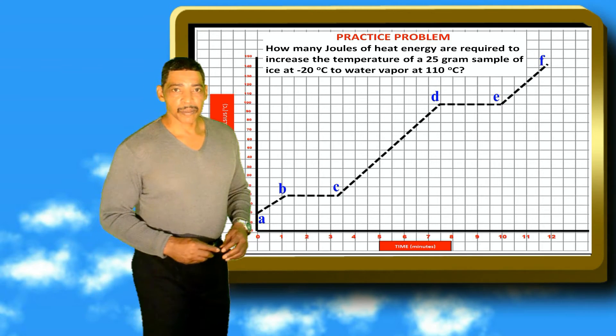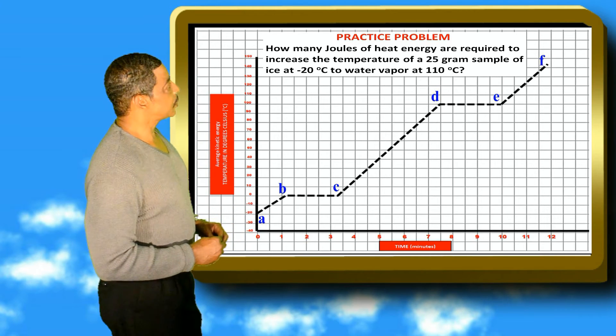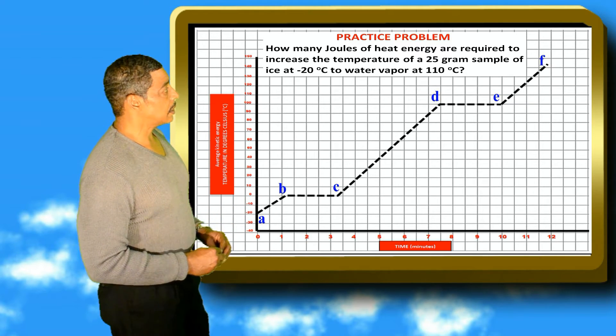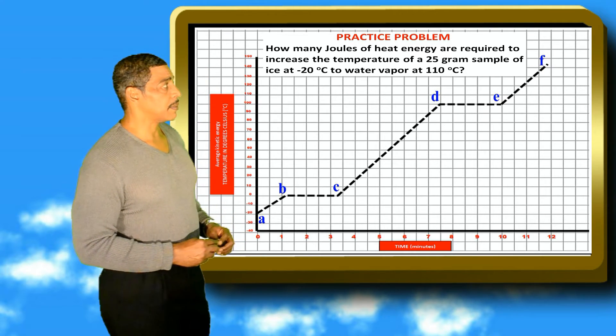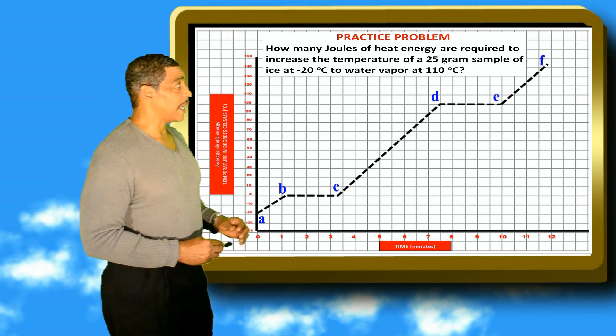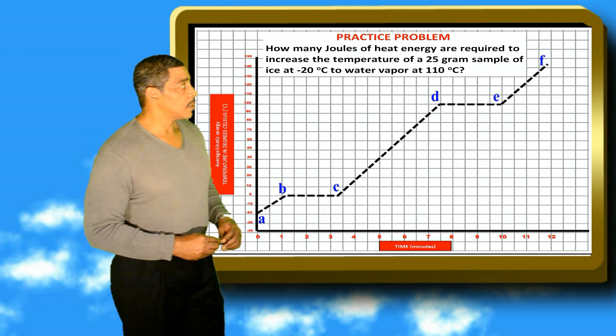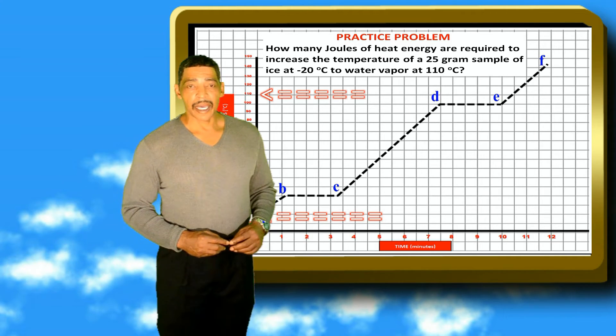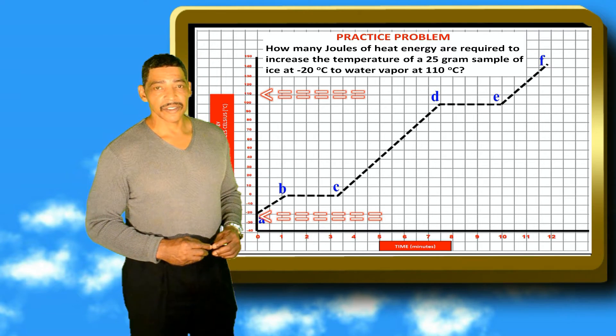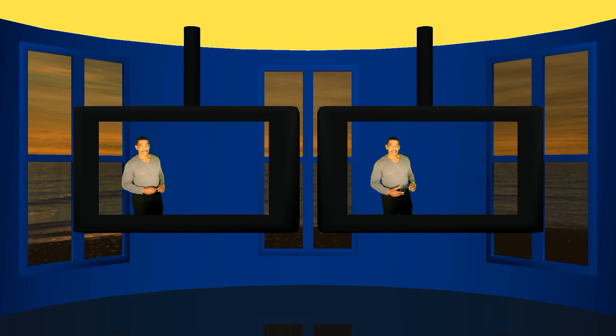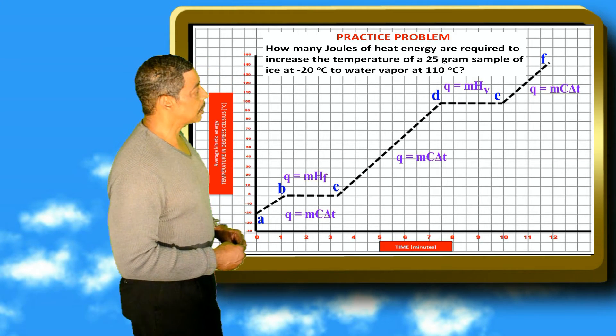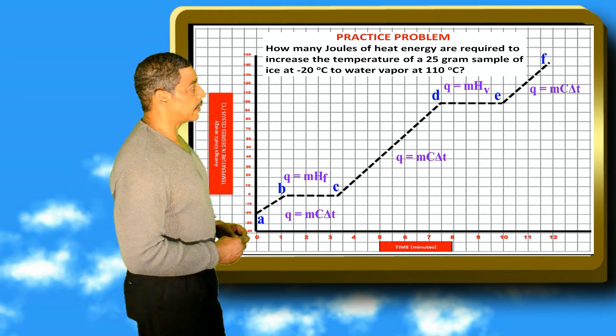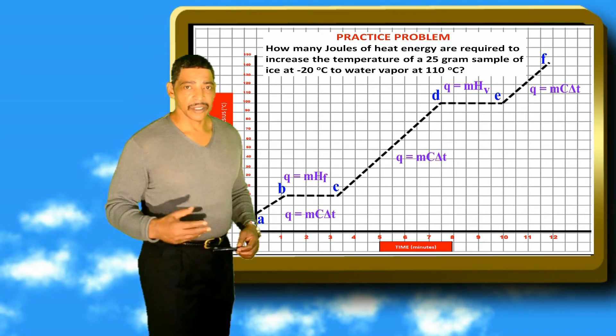Now for a quick practice problem. How many joules of heat energy are required to increase the temperature of a 25 gram sample of ice at negative 20 degrees Celsius to water vapor at 110 degrees Celsius? The easiest way to perform this calculation is to place the appropriate formula along each line segment of the heating curve and inserting the information.